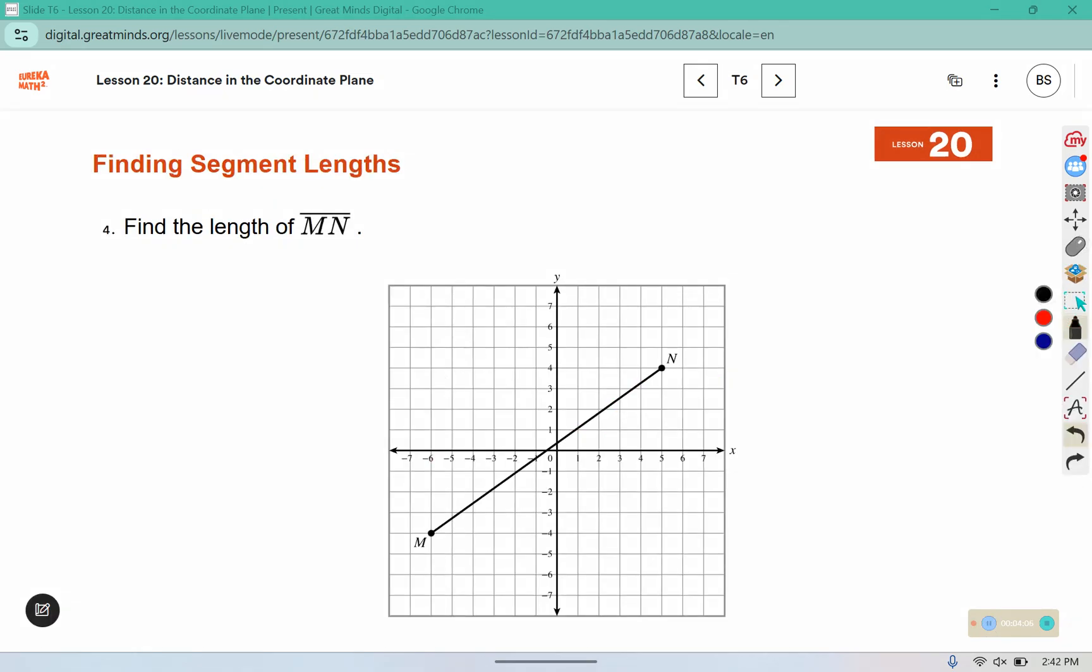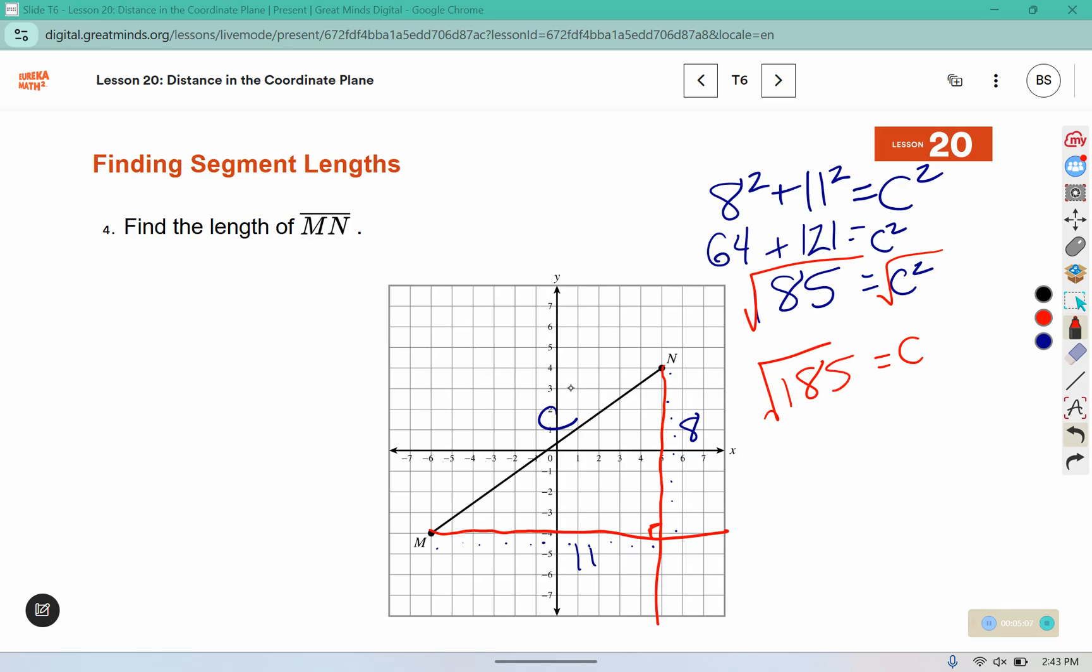For this one we need to draw in the right triangle so we're going to drop a line straight down from here and create a line going straight out from here so that we create this right angle in the corner. Now you can see here that we went 1, 2, 3, 4, 5, 6, 7, 8 boxes this way and 1, 2, 3, 4, 5, 6, 7, 8, 9, 10, 11 in this direction. So we have an 8 by 11 right triangle. 8 times 8 is 64, 11 times 11 is 121. Let's add these together that gives us 185. To undo a square we take a square root but that doesn't come out to a perfect square so we're just going to leave it in its square root format.